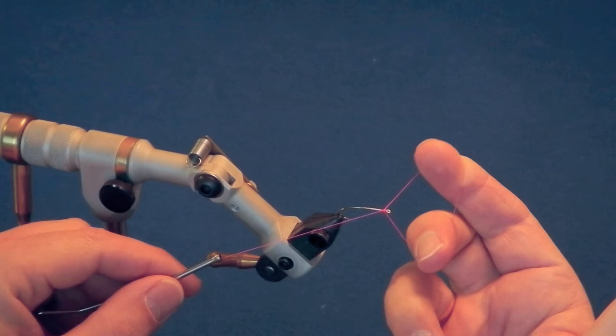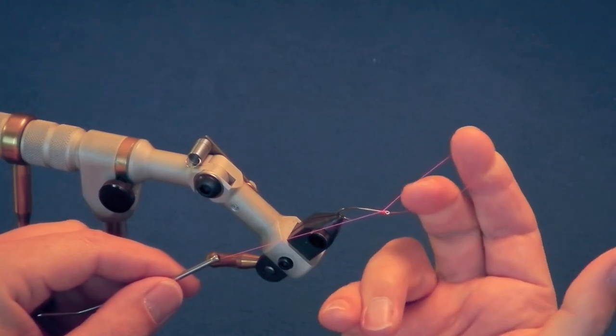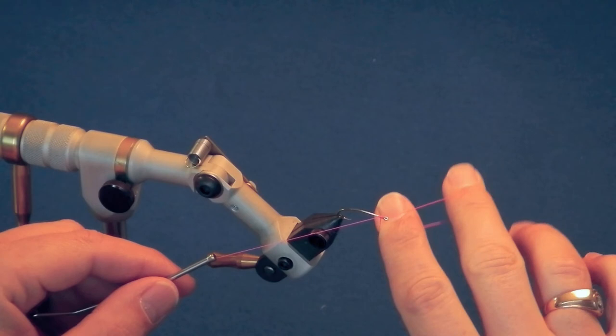While maintaining tension and keeping the loop pulled against the hook away from you, rotate your fingers counterclockwise within the loop so that your right hand becomes palm down.